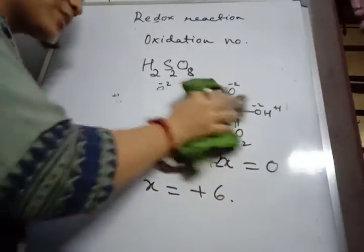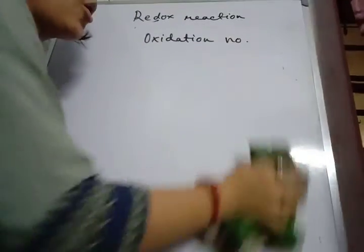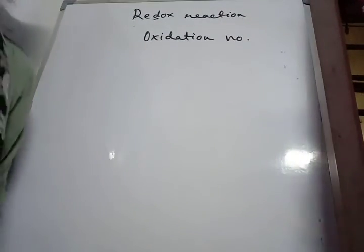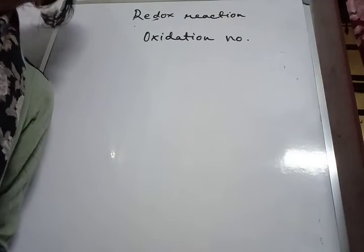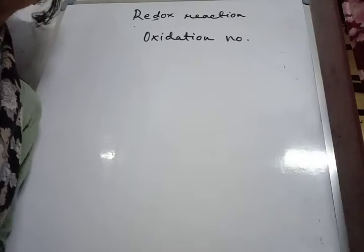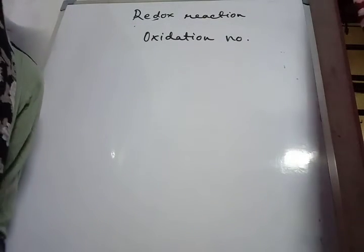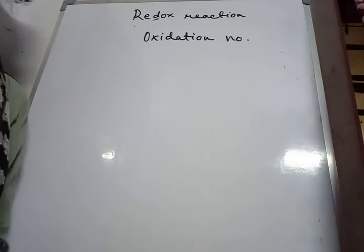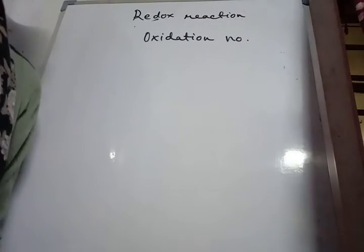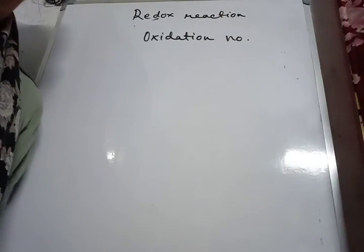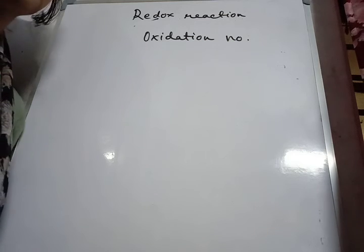Now, defining oxidation and reduction in terms of oxidation number: oxidation is a process that involves an increase in oxidation number, and reduction is a process that involves a decrease in oxidation number. An oxidizing agent is a substance that undergoes a decrease in oxidation number, and a reducing agent is a substance that undergoes an increase in oxidation number. That's it, Class 11 — thank you.